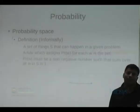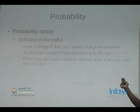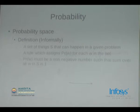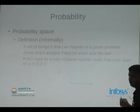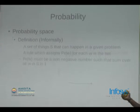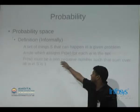When we talk about probability in a mathematical sense, we define something called a probability space. You can solve any probability problem without encountering this term, but just to be mathematically complete: a probability space is a set S of things that can happen, and a rule P which assigns a real number to each element W in S, where P is non-negative and the summation of P(W) for all W belonging to S equals 1.